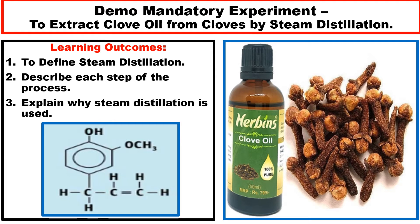Today we're going to look at a mandatory experiment found in the organic section: to extract clove oil from cloves by a process called steam distillation. We probably all came in contact with cloves before — they're used for flavoring meats such as ham, and also as a pain reliever. If you've got a toothache and put a bit of clove oil onto it, it'll actually numb the pain.